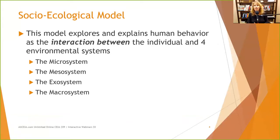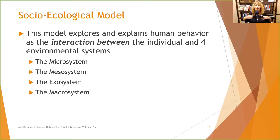The socioecological model explores and explains human behavior as the interaction between the individual and four environmental systems. There's actually a fifth one that is more longitudinal, but we're going to talk about the four main ones today: the micro, the meso, the exo, and the macro systems.